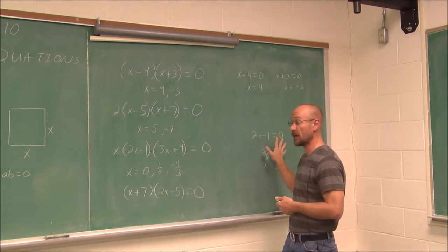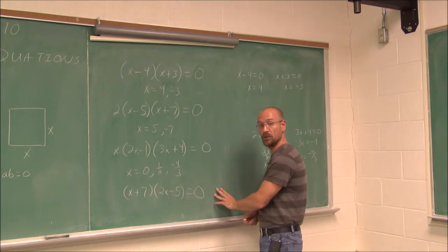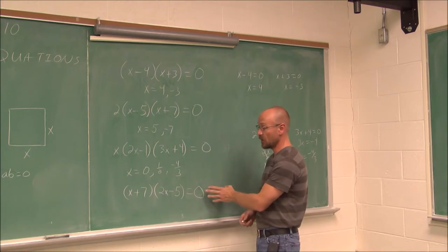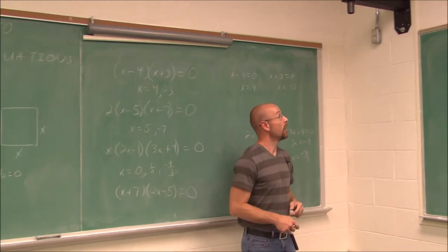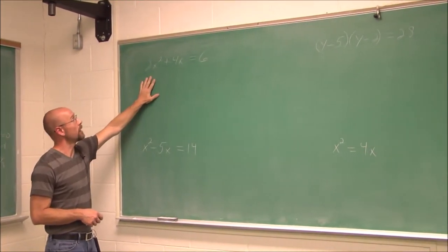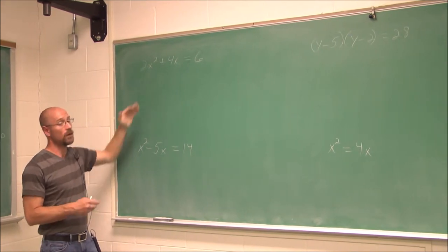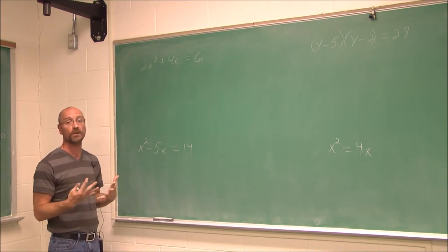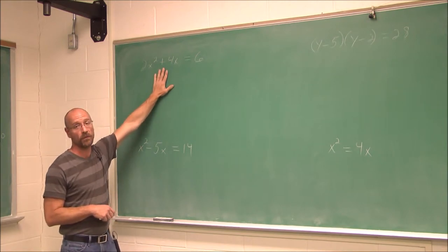This one I'm going to leave for you to attempt on your own — find the zeros, otherwise known as the roots, that would make this a true statement. Now, a quadratic is ax squared plus bx plus c equal to 0. We have to have it equal to 0 in order to solve the equation, so we have to put it in standard form before we begin.